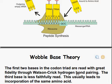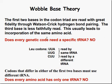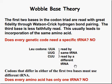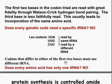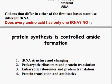Wobble base theory: the first two bases in the codon triad are read with great fidelity through Watson-Crick hydrogen bond pairing. The third base is less faithfully read, which usually leads to incorporation of the same amino acid. So UUA, UUG, CUU can be read by the same tRNA. Codons that differ in either of the first two bases must use different tRNA. And does every amino acid have only one tRNA? No — there are multiple tRNAs for all the different amino acids.